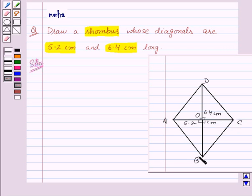the diagonals bisect each other. So, AC bisects BD and that implies OD is equal to OB is equal to half of BD. Therefore, OD is equal to 3.2 cm. Also, OB is equal to 3.2 cm.